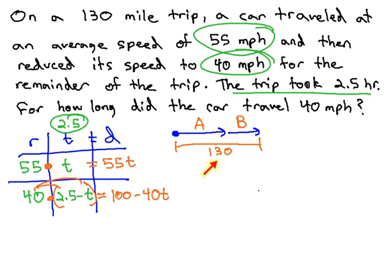we are told the entire trip was 130 miles. If we add the two distances together, we will get the total trip of 130 miles. So by adding the column, we get an equation.